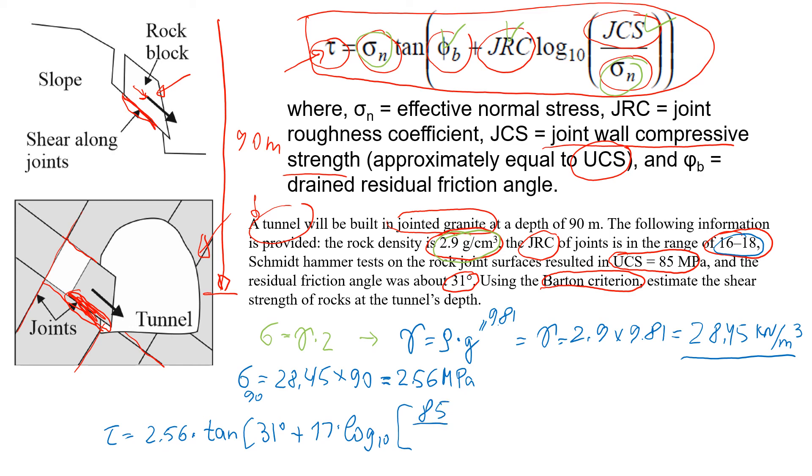Divided by the normal stress which we know is 2.56. So when we do calculations we're going to get that shear strength is approximately 3.92 MPa. So that's going to be the answer.